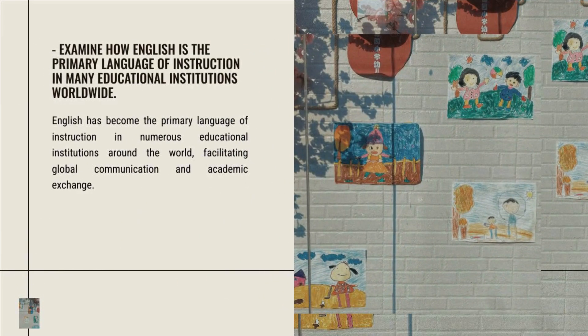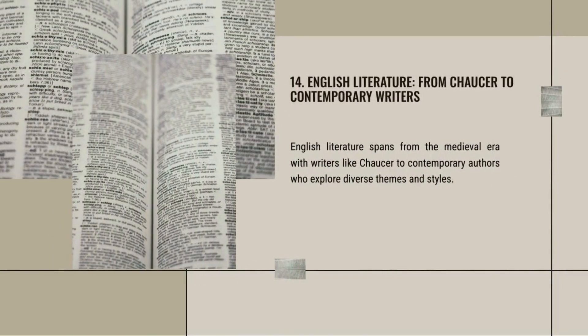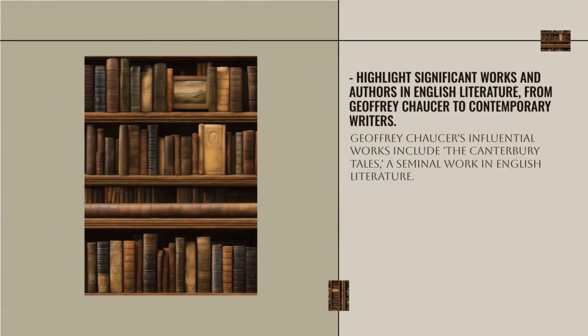English has become the primary language of instruction in numerous educational institutions around the world. English literature spans from the medieval era, with writers like Chaucer — whose influential works include The Canterbury Tales — to contemporary authors who explore diverse themes and styles.